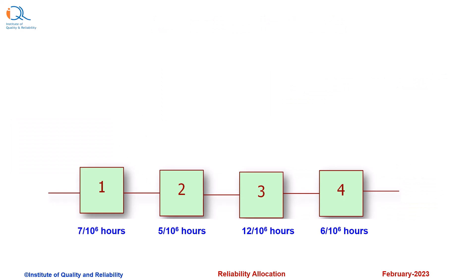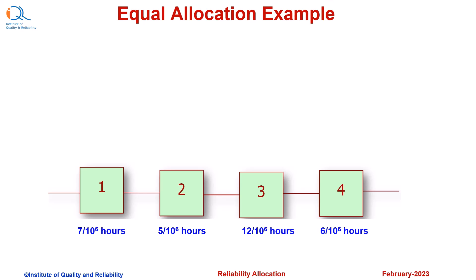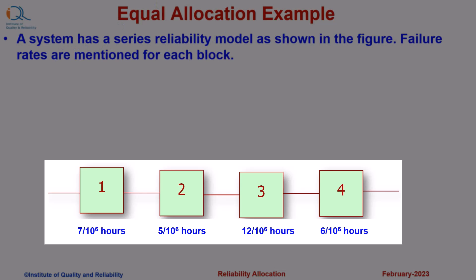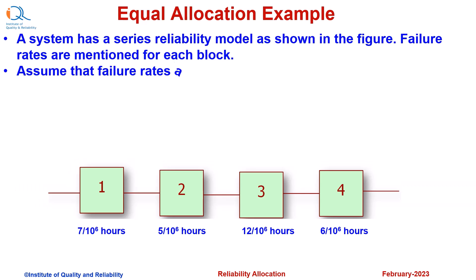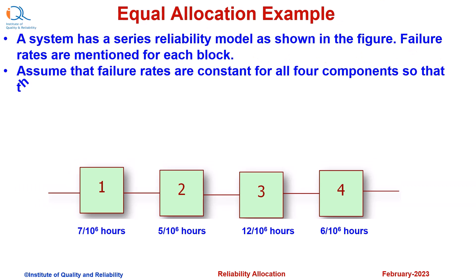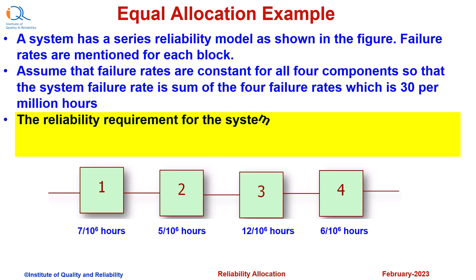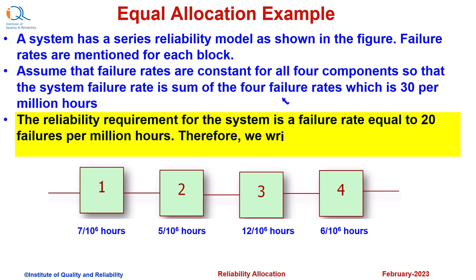Let us now see a simple example of the equal allocation method. A system has a series reliability model as shown in the figure. Failure rates are mentioned for each block. Assuming constant failure rates for all four components, the system failure rate is the sum of four failure rates, which works out to be 30 per million hours. The reliability requirement for the system is a failure rate equal to 20 failures per million hours. Therefore, lambda star equals 20 per million hours.